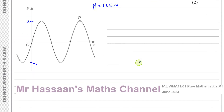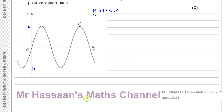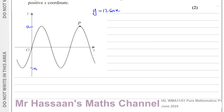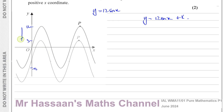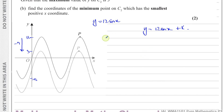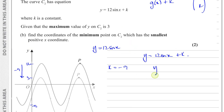The equation we're looking for is y equals 12 sine x plus k. If the maximum is 3 and it was previously 12, then it's gone down nine spaces — from 12 to 3. So k has to be equal to negative 9, and our equation is y equals 12 sine x minus 9.